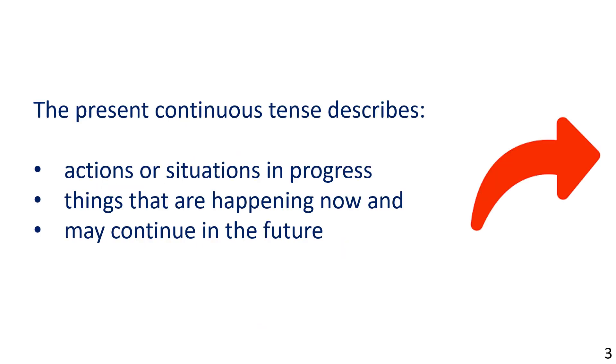The Present Continuous Tense describes actions or situations in progress — things that are happening now and may continue in the future.